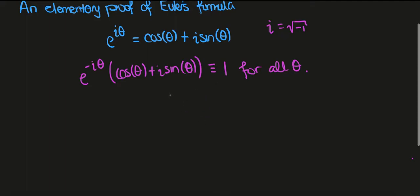Now how can we do this? Well what we can do is define a function which is f of theta being exactly this. So e to the minus i theta times cosine theta plus i sine theta.